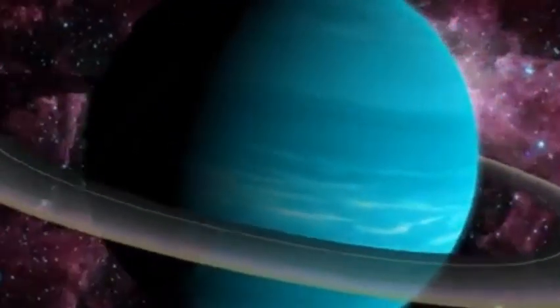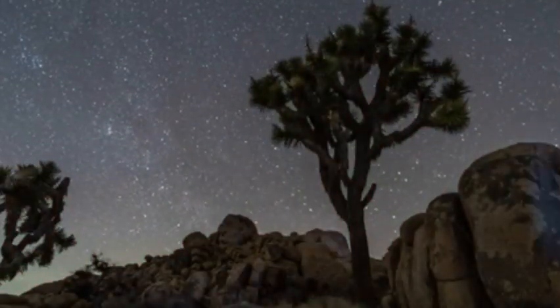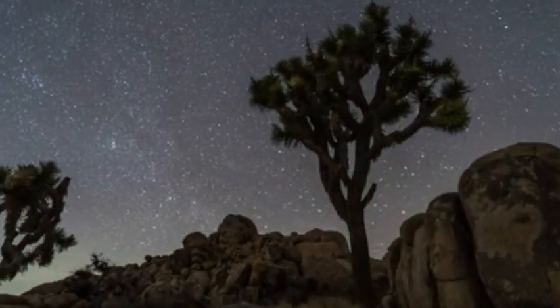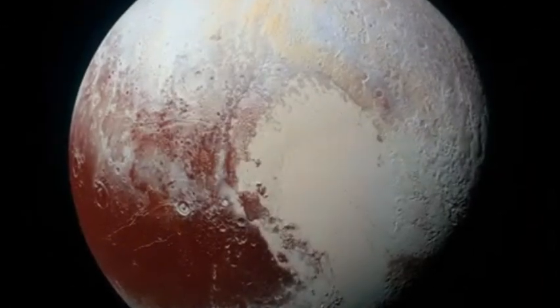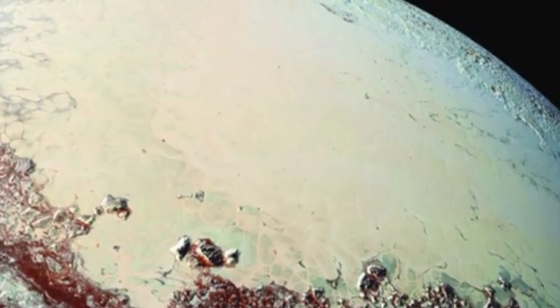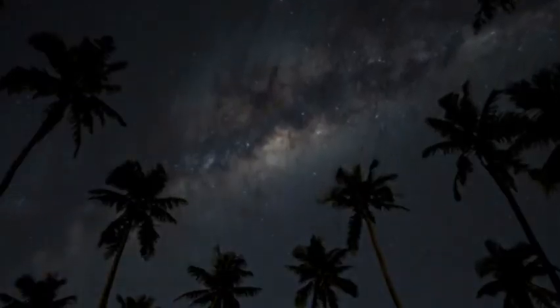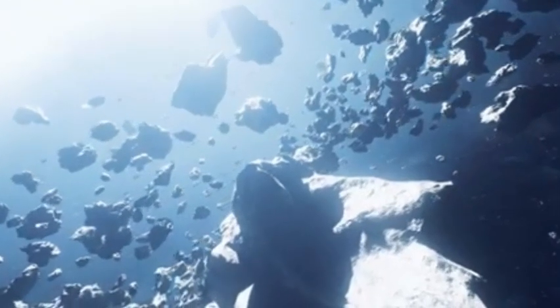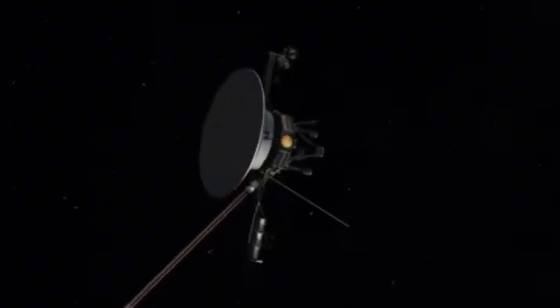That photo and Sagan's reflection on it became a defining moment in the history of space exploration. He reminded us of our fragility, unity, and the vastness that surrounds us: 'That's here, that's home, that's us.' This simple image encapsulated Voyager's deeper mission—to humble us, to inspire awe, and to give us perspective. The fact that this photo was taken by the same spacecraft that now cruises through interstellar space is profoundly poetic.